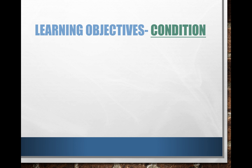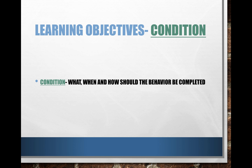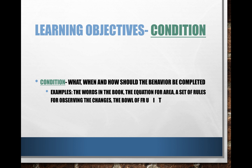Let's move on to condition. Bloom's refers to the behavior — the verbs at the beginning of the learning objective. The next thing is the condition: the what, the when, and how the behavior should be completed. Some examples include 'the words in the book,' 'the equation for area,' 'a set of rules for observing the changes,' or 'the bowl of fruit.' This is a piece of the larger learning objective, so let's move on and see how it works.